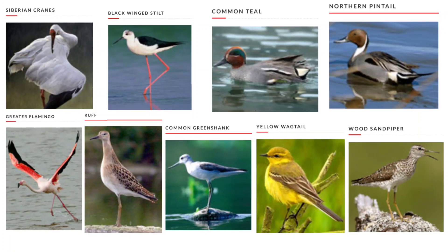Here are some examples of migratory birds: the first one is Siberian cranes, the second is Black-winged stilt, the third is Common teal, the fourth is Northern pintail, the fifth is Greater flamingo, the sixth is Ruff, the seventh is Common greenshank, and the eighth is Yellow wagtail.